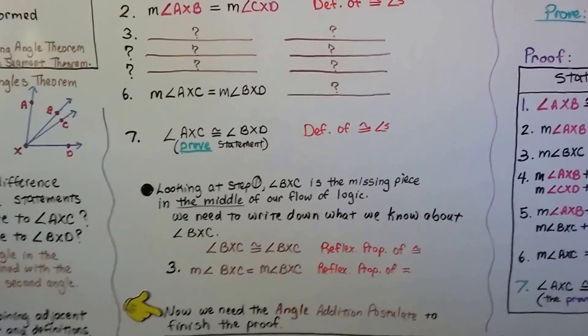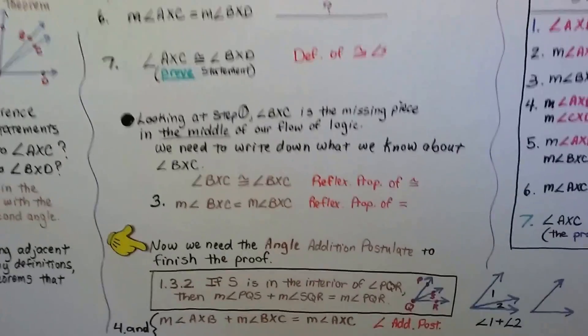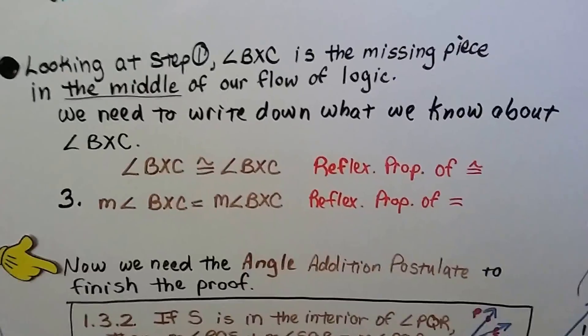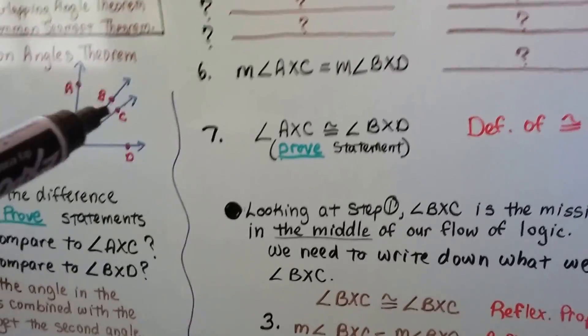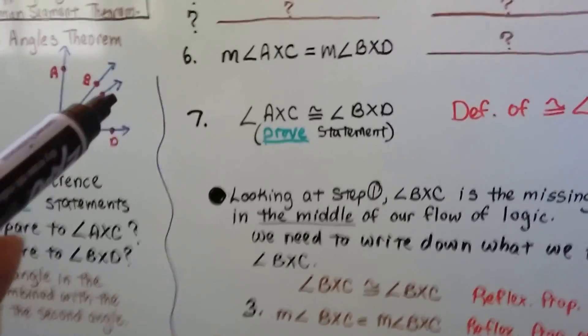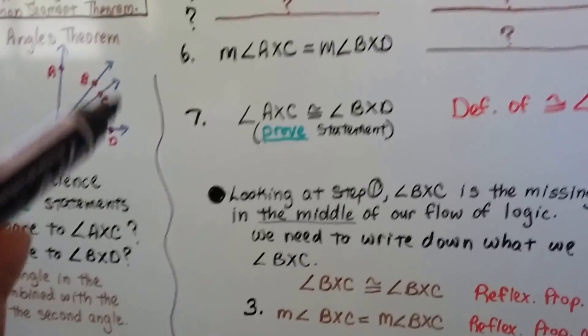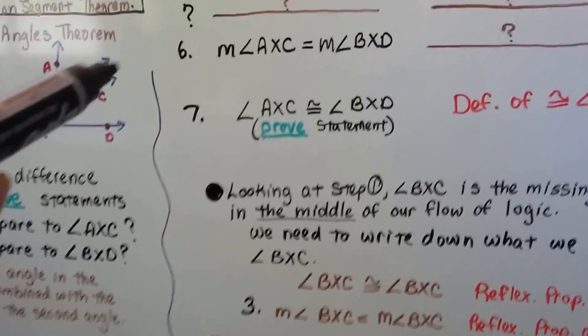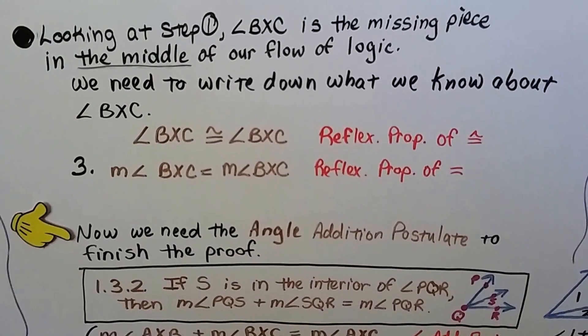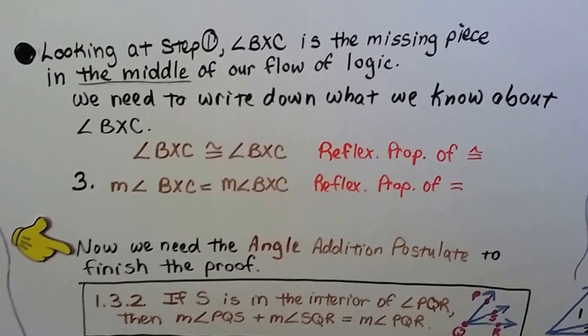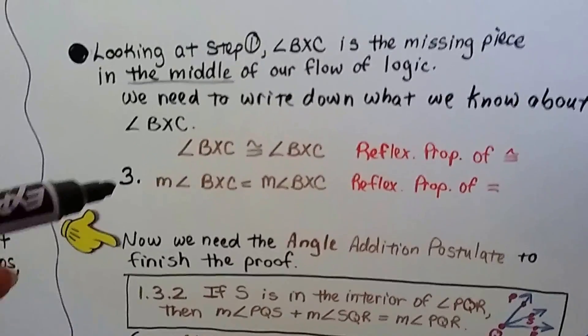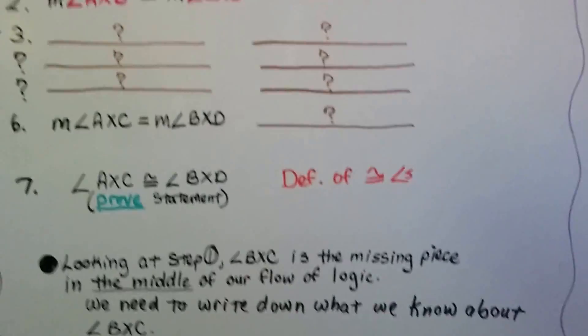We need to write down what we know about angle BXC. Well, angle BXC is congruent to angle BXC. That's the reflexive property of congruence. What it's saying is, because it's being included with these two as an angle, and then it's being included with these as an angle, that it is equal to itself. It's congruent to itself. So the measure of angle BXC is equal to the measure of angle BXC. That's the reflexive property of equality. So now we have our third point, our third piece.